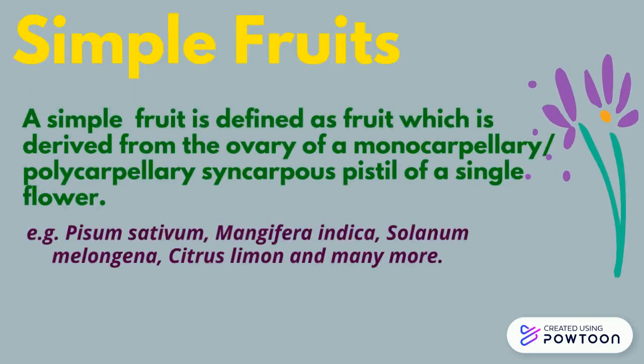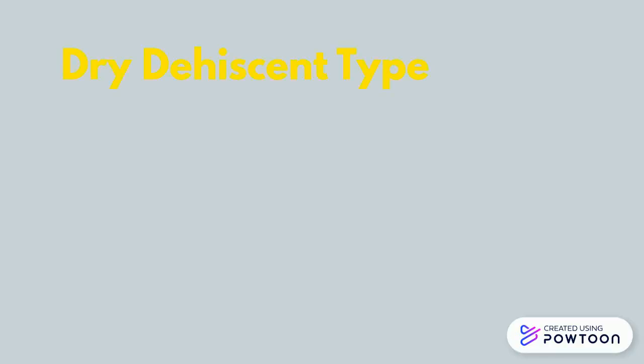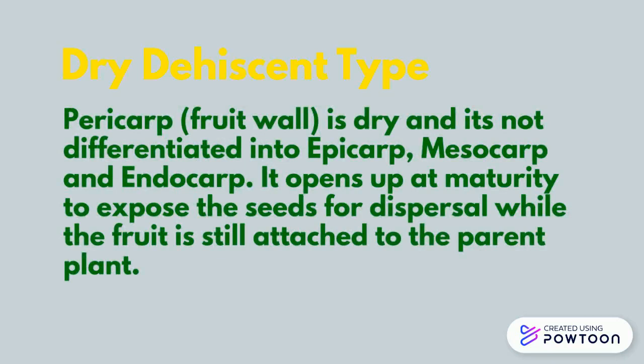A simple fruit is defined as a fruit which is derived from the ovary of a monocarpillary or polycarpellary syncarpous pistil of a single flower. This type of fruit has a pericarp which is dry and is not differentiated into epicarp, mesocarp and endocarp.